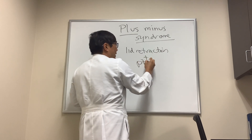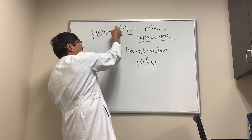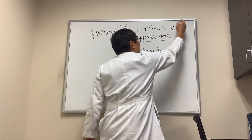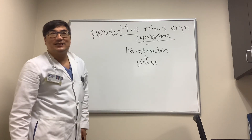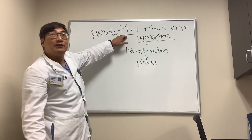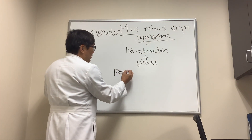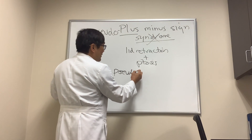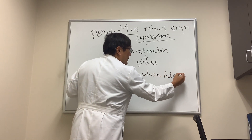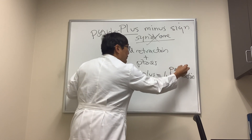Today we're going to be talking about the pseudo plus-minus sign, which is not from the plus-minus syndrome. A pseudo means either the plus is pseudo or the minus is pseudo. If you have a pseudo plus, that means the lid retraction is not real — that's a pseudo lid retraction.